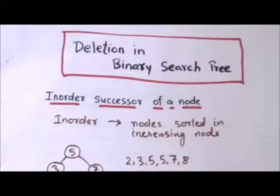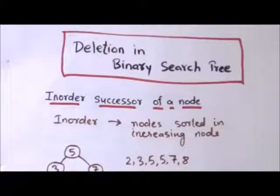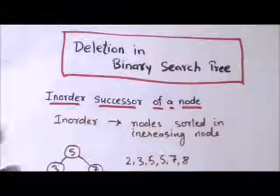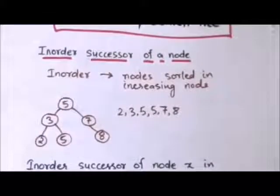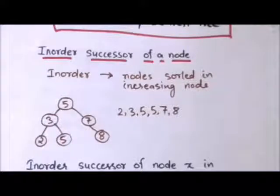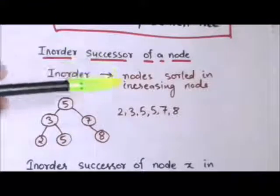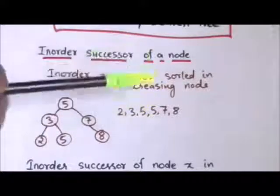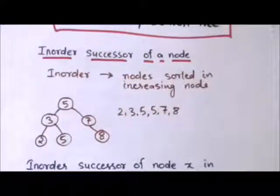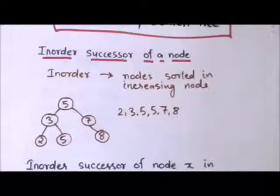Hello friends, welcome back. In this tutorial we will study about deletion in a binary search tree. But first of all we must know about the in-order successor of a node in a binary search tree. If we traverse a binary search tree in in-order, then we will get its nodes sorted in increasing order. For example, traversing this binary search tree in in-order gives us nodes in the order 2, 3, 5, 5, 7, 8.